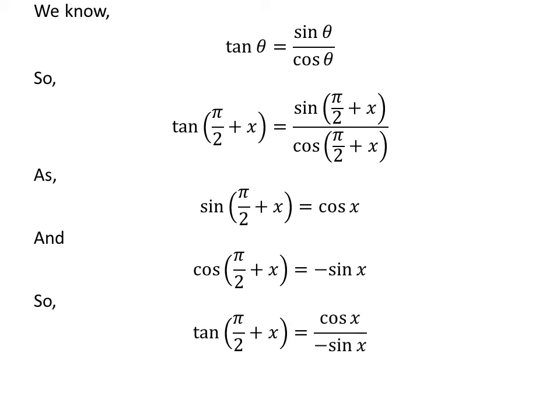Let us apply the above identities in the above expression of tangent of half of pi plus x. So, tangent of half of pi plus x is equal to cosine of x upon minus sine of x.